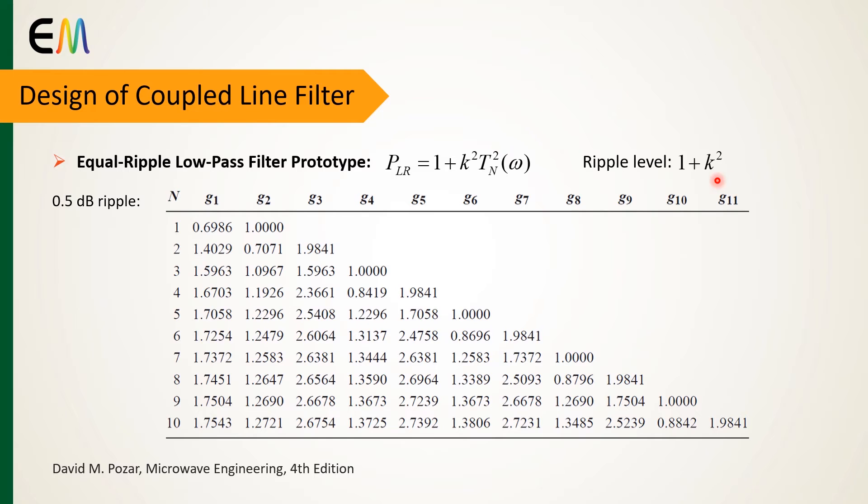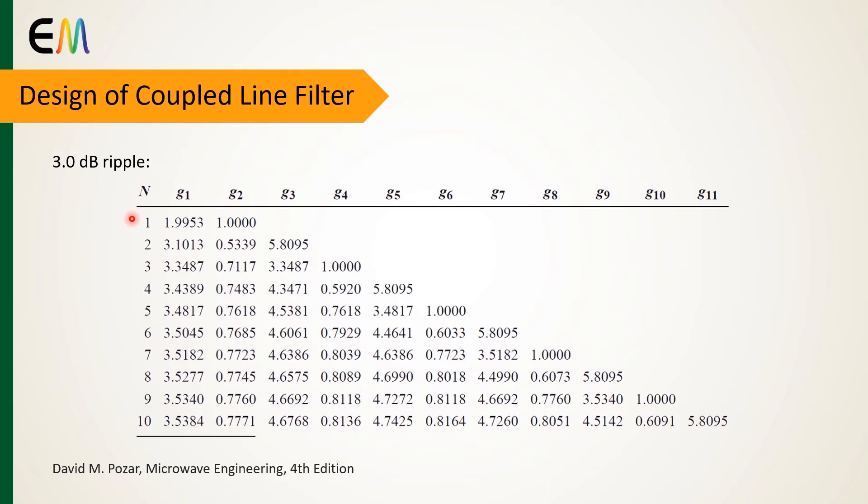And in this slide, the normalized values of filter elements is shown for 3 decibel ripple level.